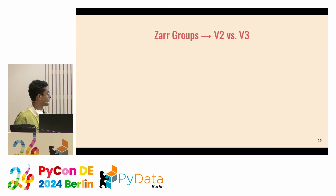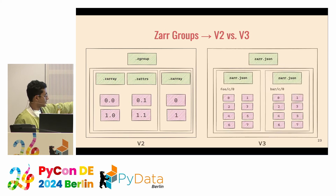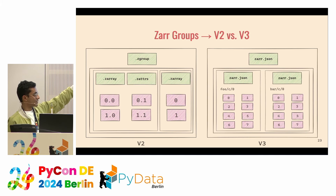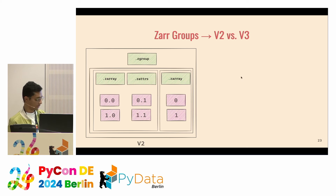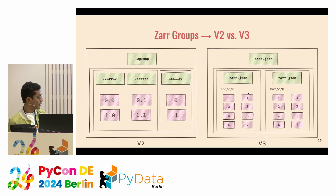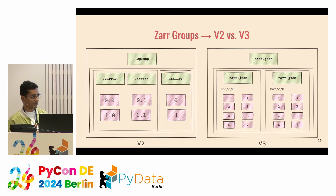In v3, there's a top-level zarr.json which contains the attributes and node name. When you have two individual arrays grouped together into a hierarchy — known as Zarr groups — each has its own zarr.json similar to what we saw for single arrays. You can organize multiple arrays this way, and the hierarchy can be as deep as 100 node levels or more. It's essentially a tree structure.